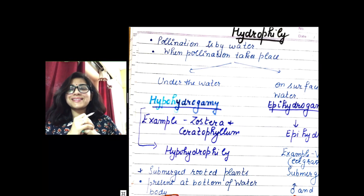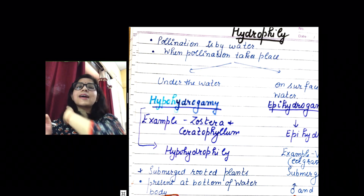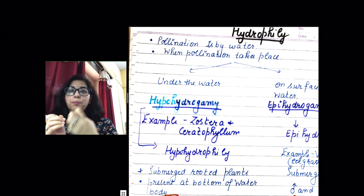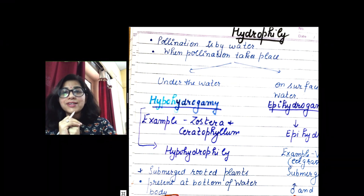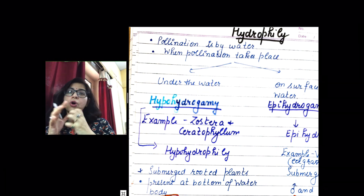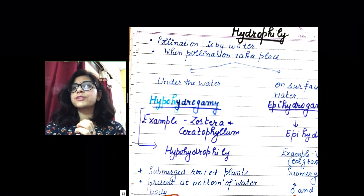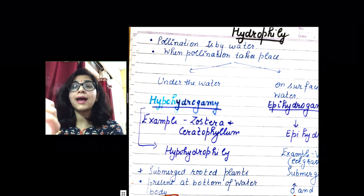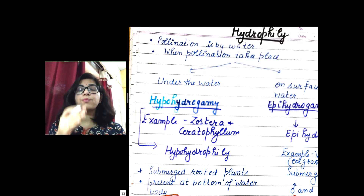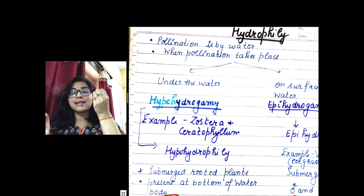Good morning students. We have already started with pollination and finished with one type — pollination by wind, known as anemophily. Today we will talk about pollination by water, which is known as hydrophily. The word 'hydro' refers to water.